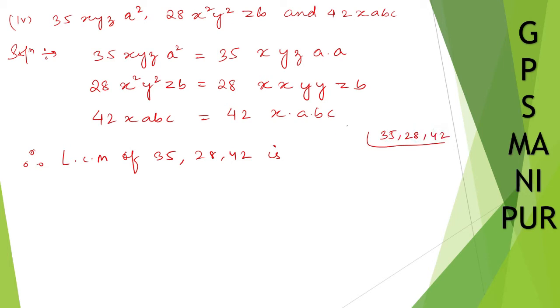35, 28, and 42. So I can divide by 7. 7 times 5 is 35, 7 times 4 is 28, 7 times 6 is 42.